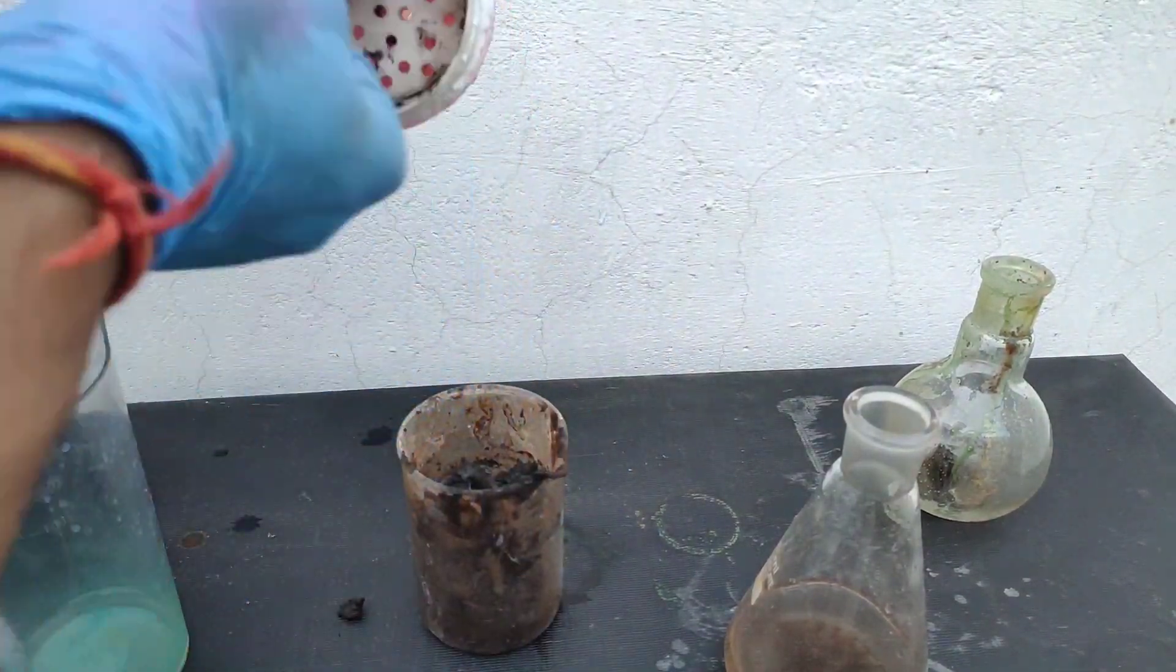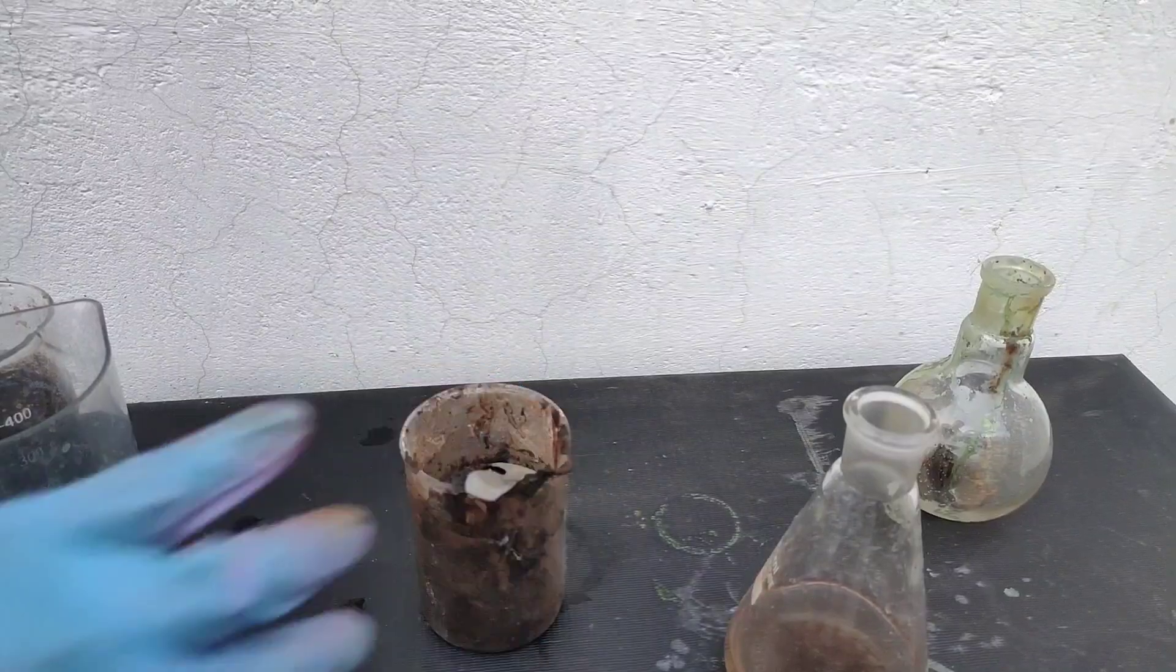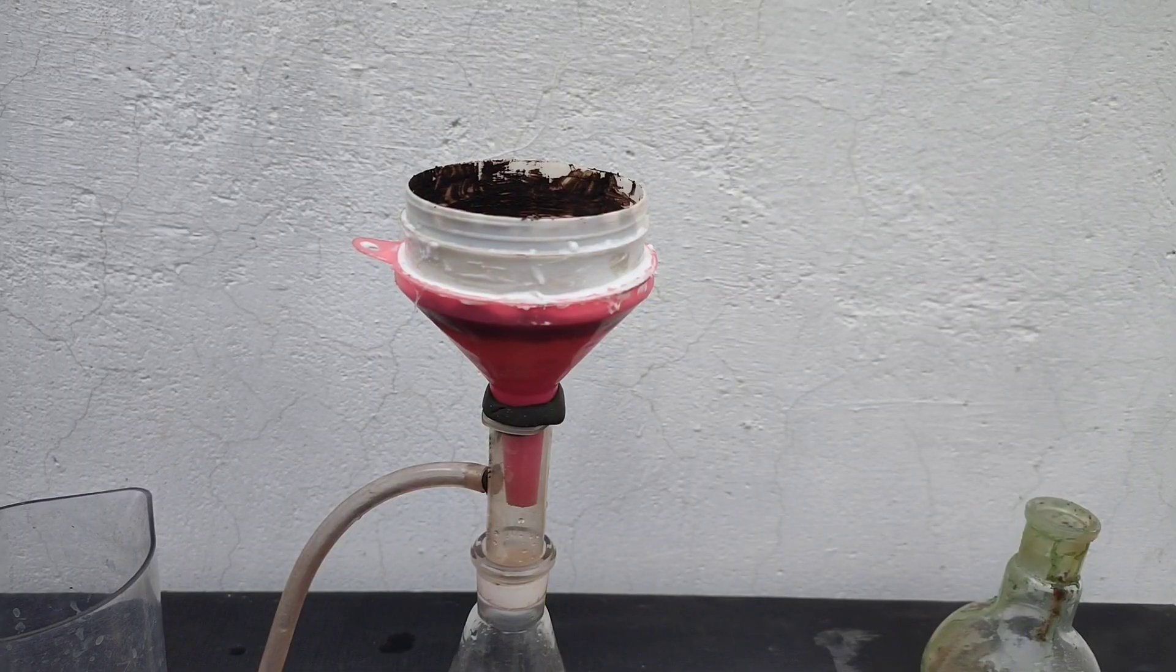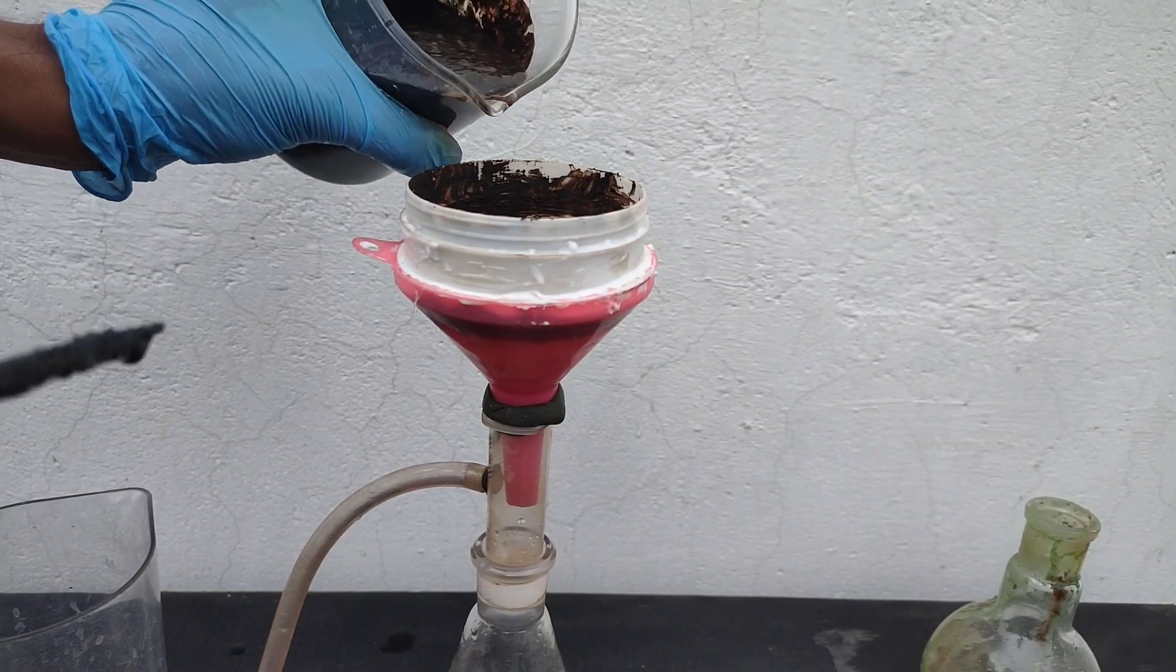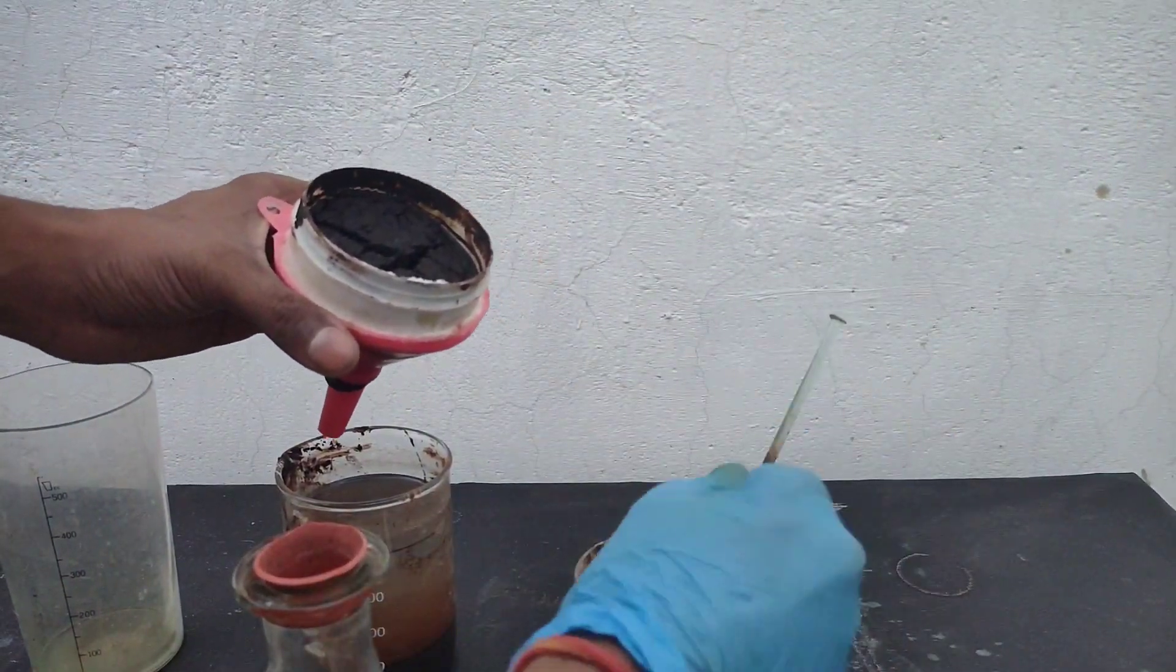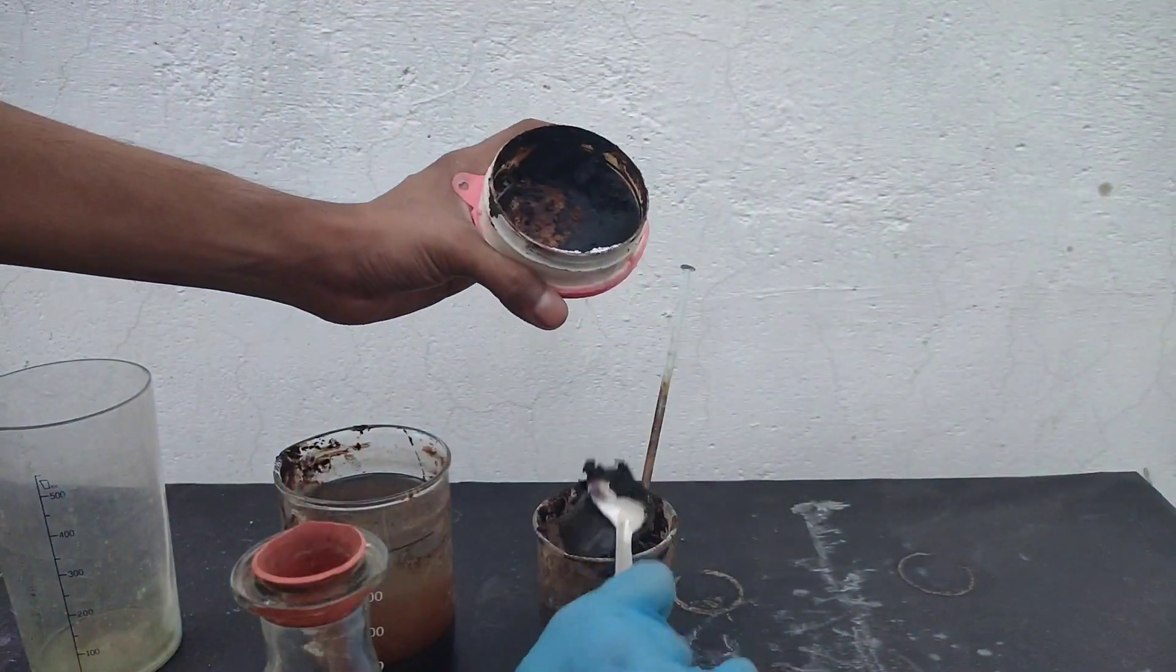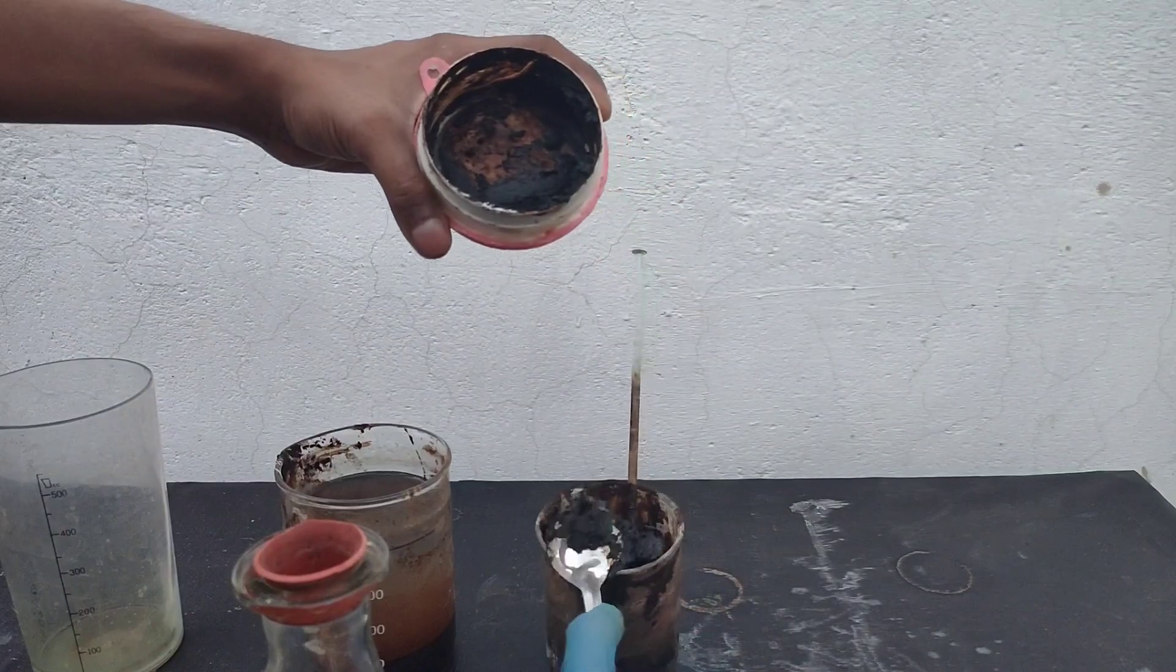After filtration I transferred the precipitate to the beaker. Then I filtered my precipitate made by chemical method. The precipitate was excess, so I added only half the amount into the Buchner funnel and washed the precipitate with water to remove soluble salts. This precipitate was also combined with the previous precipitate.